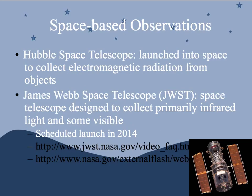Some popular telescopes: the Hubble Space Telescope is the most popular. It was launched into space to collect electromagnetic radiation from objects — it orbits our Earth and has solar panels. We're also launching the James Webb Space Telescope, which is designed primarily to collect infrared light and some visible light — so it's collecting heat information from things out in space.